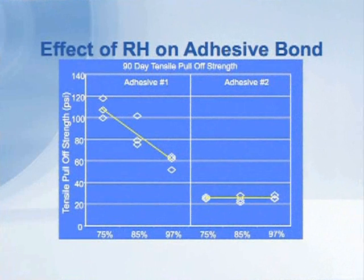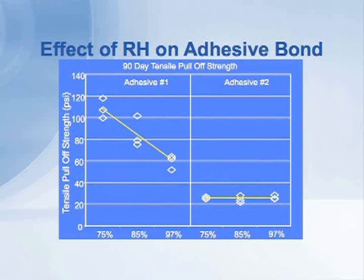By doing this we can actually measure how the moisture is affecting the adhesive bond, as shown in the graphs on this next slide. There are two different adhesives that we tested here as examples. The vertical left-hand axis shows the tensile bond strength — 20, 40, 60, up to 140 pounds per square inch of bond strength.